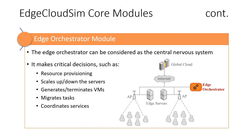The edge orchestrator module is another critical one. The edge orchestrator can be considered as the central nervous system, which makes critical decisions. Since we are also working on the workload orchestration problem, we propose a standalone module for this operation.